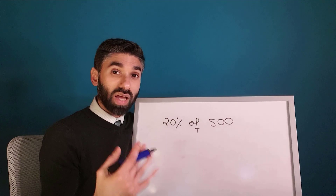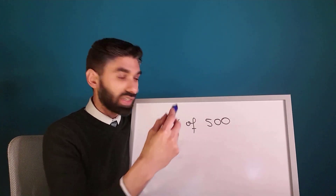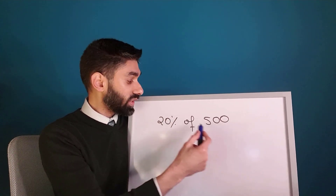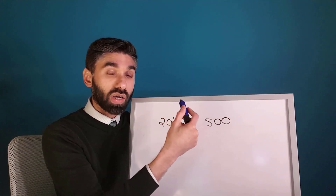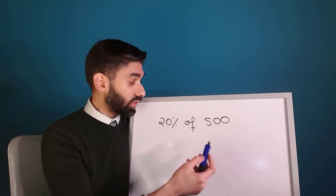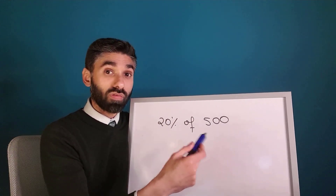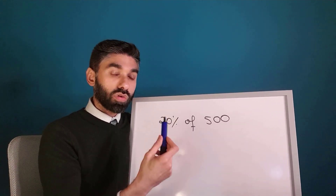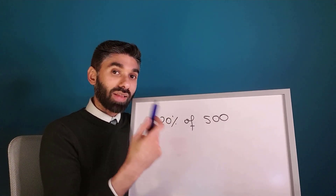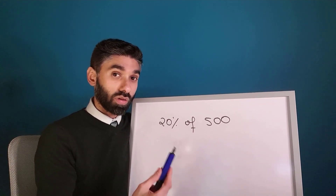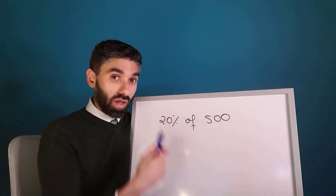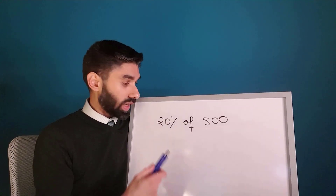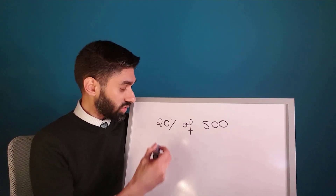Usually you'd find 10% by dividing by 10 and then multiply by 2 to get 20% of 500 — simple, I know. But our aim is to be able to answer more difficult percentage questions, and this one method will cover all four types.